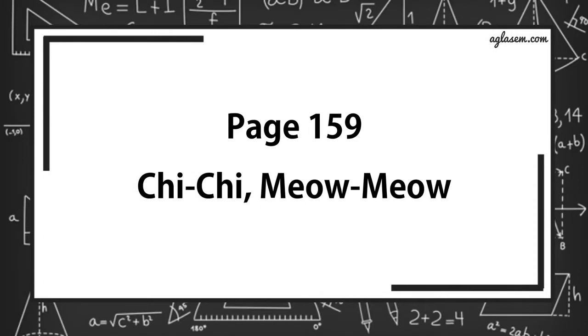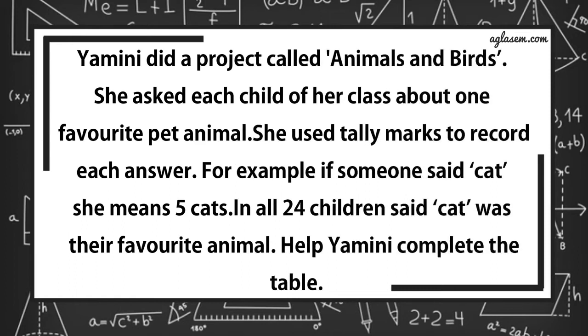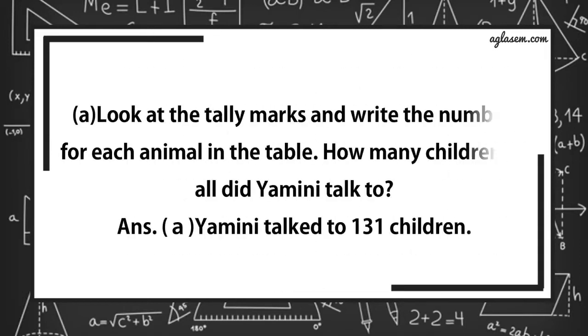Now, turn to page number 159, Chi Chi Meow Meow. Yamini did a project called Animals and Pets. She asked each child of a class about one favorite pet animal. She used tally marks to record each answer. For example, if someone said cat, she marks five cats. In all 24 children said cat was their favorite animal. How many children in all did Yamini talk to?